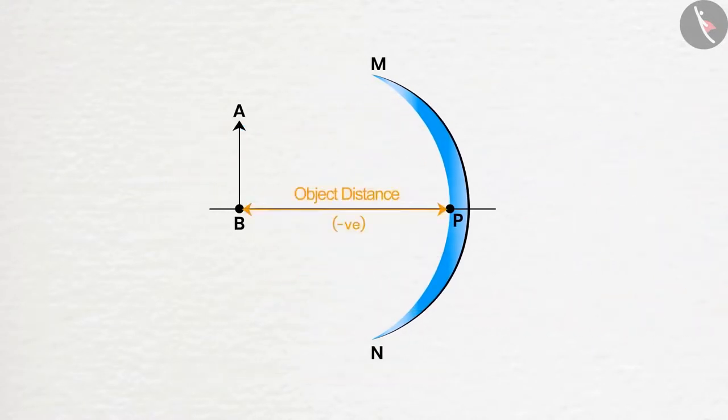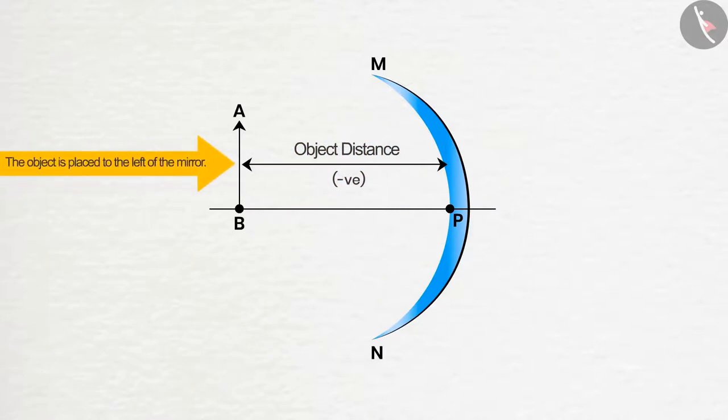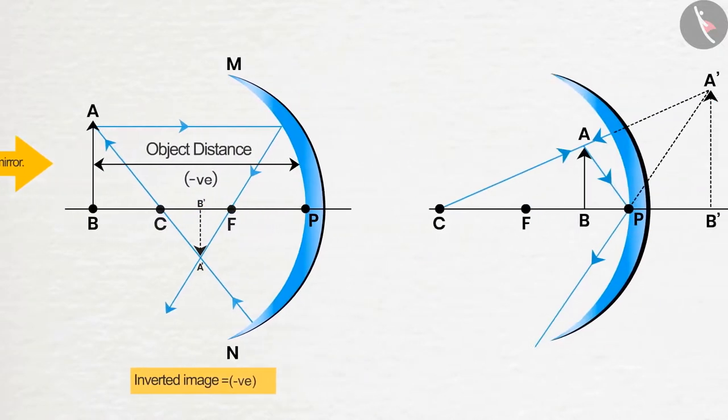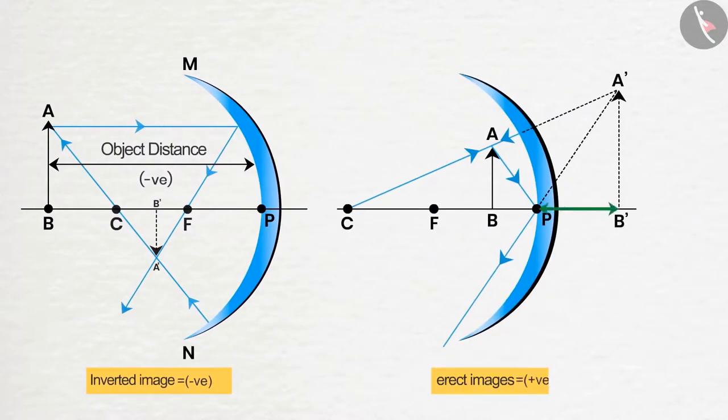The object distance will always be negative, as the object is placed to the left of the mirror. In mirror, distance of real image is taken as negative, and distance of virtual image is taken as positive.